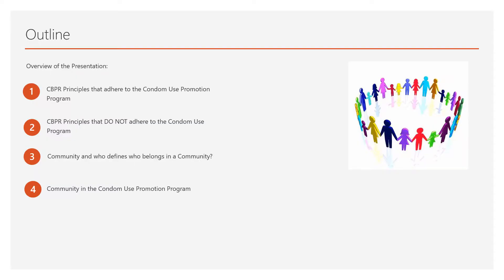This is the outline of the presentation. The overview starts with community-based participatory research, which is the major emphasis of this presentation. Then there are the CBPR principles that adhere to the condom use promotion program, and the CBPR principles that do not adhere to the condom use program. Second to last is community and who defines who belongs to a community, and finally, community in the condom use program promotion.